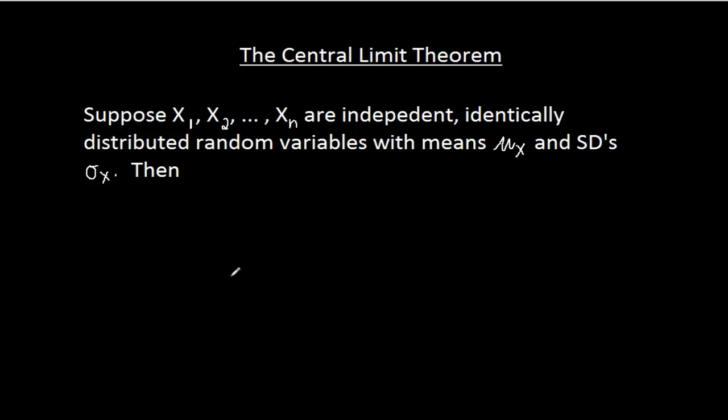Well it tells us two different things. First of all, if I take the sum of these n independent, identically distributed random variables, so I have x1 plus x2, all the way up to xn, that itself is going to be a random variable.